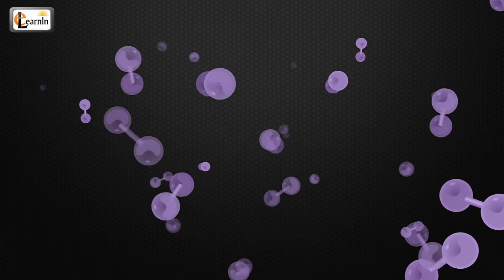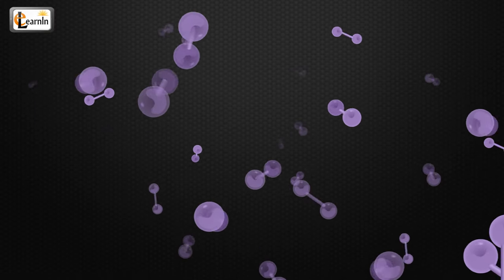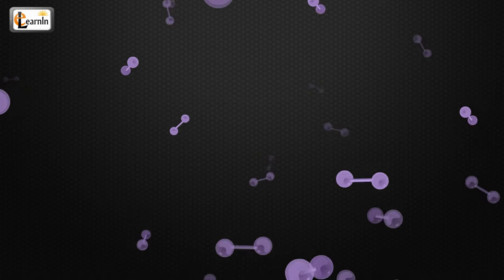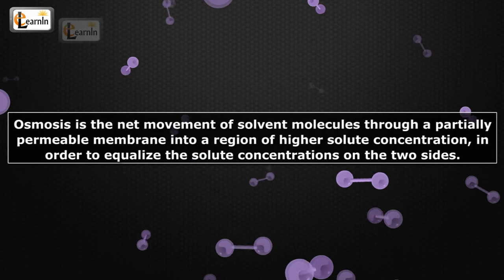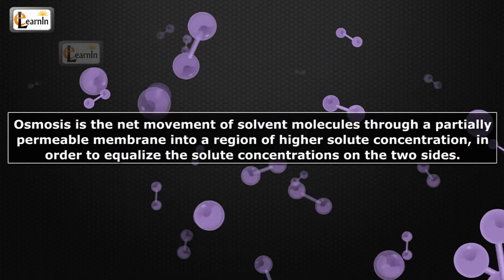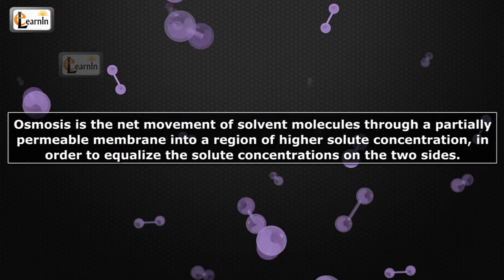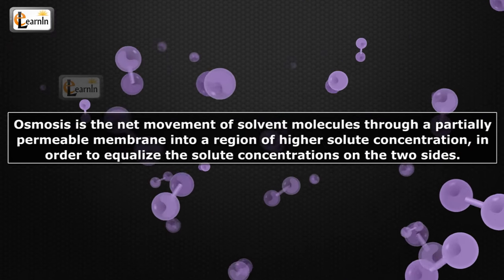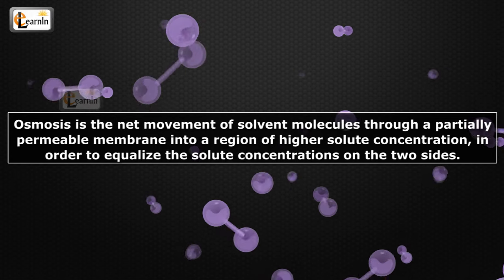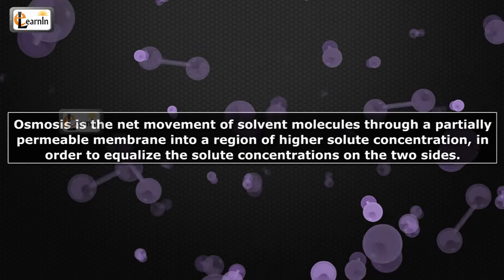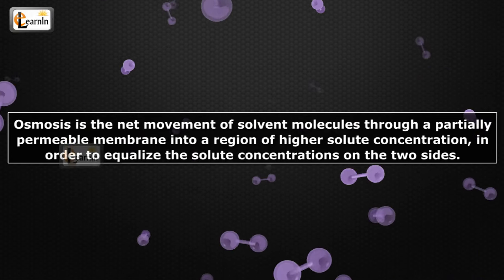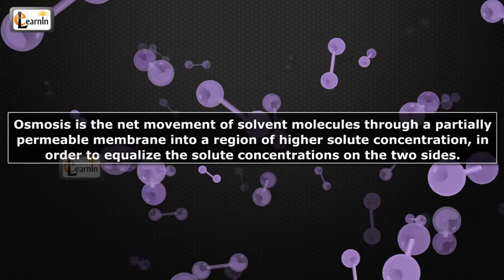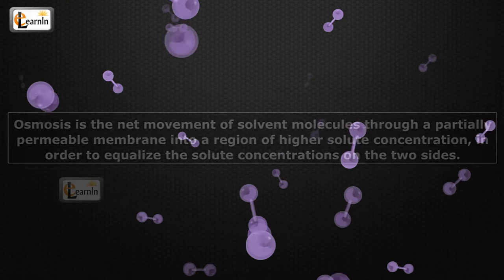The molecules will move from higher concentration to a lower concentration. Osmosis is the net movement of solvent molecules — in this case iodine — through a partially permeable membrane, like a plastic bag, into a region of higher solute water concentration, in order to equalize the solute concentrations on the two sides.